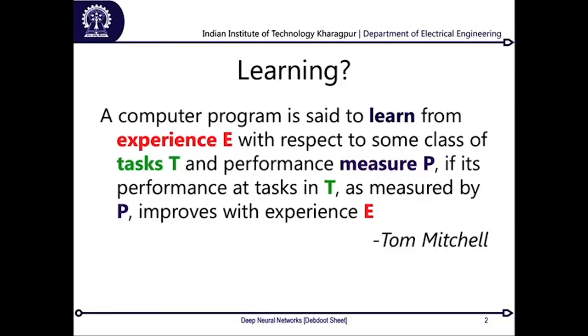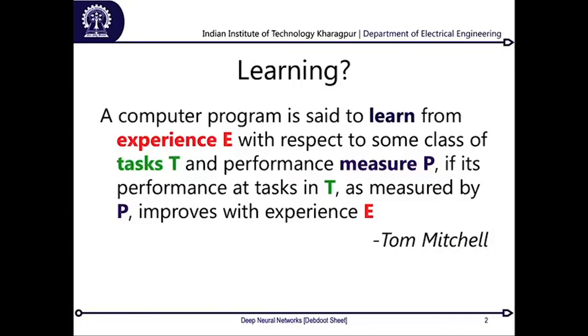Before I start, I would come down to the basic definition of learning. When we say learning, it is not by definition that there should be a set of features and then you should be able to classify something. This is one of the major misconceptions people have. This can be a regression problem as well, as we had seen for decision trees and random forests. Let us define what learning is — the definition which Tom Mitchell puts down is quite simple.